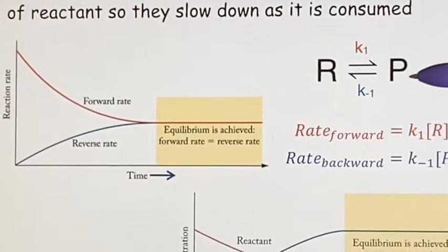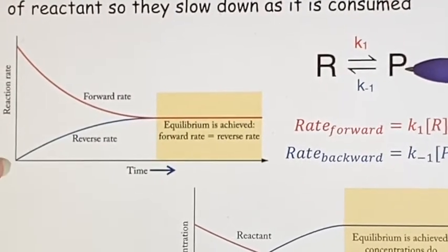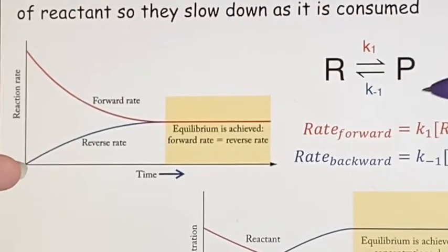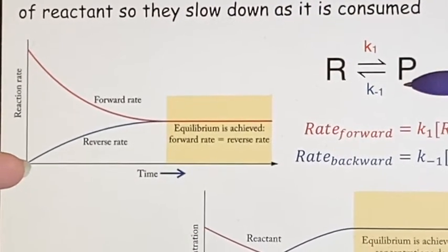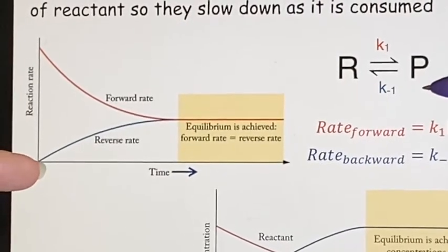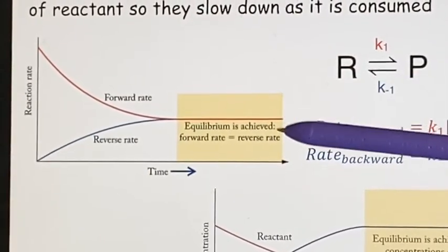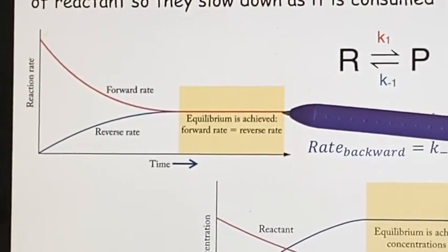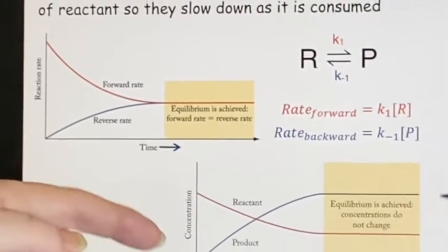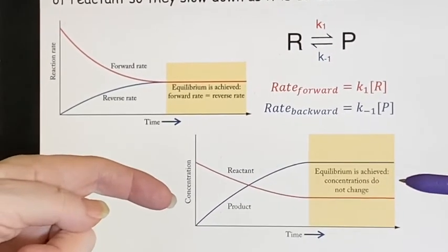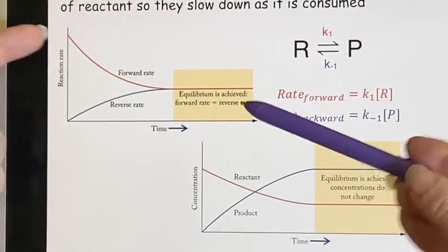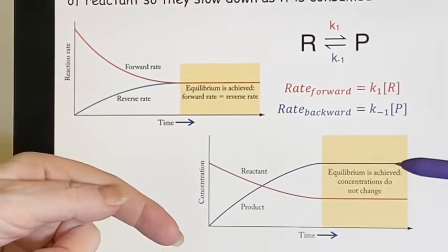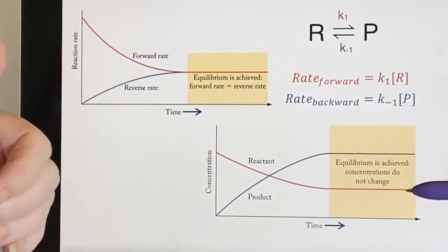At the same time, initially there was no product whatsoever, so the reverse rate was nothing. But as you create more product, then the reverse rate is going to increase. Ultimately, you achieve equilibrium when the rates forward and backward are exactly the same. Now that does not mean the concentrations are the same, because the rate is not the same thing as the concentration. But it does mean that once you've gotten to it, the concentrations will not continue to change.